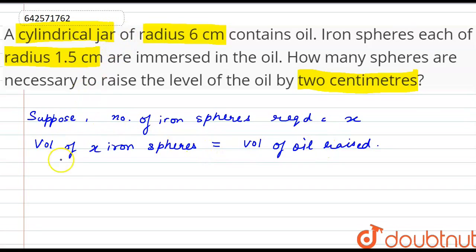So the volume of x iron spheres would be x into 4 by 3 pi r cube. And the volume of oil raised would be pi r square h, as the vessel is a cylindrical jar.